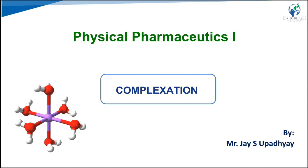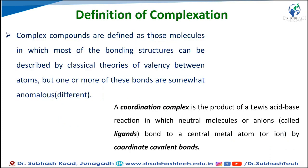Hello everyone, today we are going to discuss about the topic of complexation. First of all, we have to see what complexation is. The complexation or complex process refers to compounds defined as structures in which most bonding can be described by classical theories of valency between atoms, but one or more bonds are anomalous or different types. That process we call complexation.